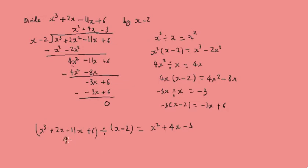Now, this part is called the dividend, this part is the divisor, and this part is called the quotient. In this example, we don't have a remainder. But we're now going to do an example where we will have a remainder, using exactly the same method.